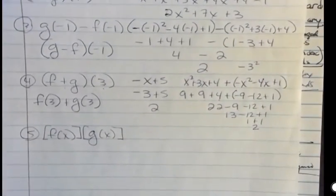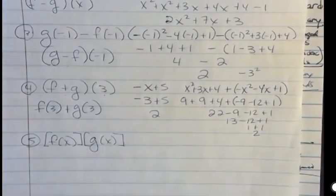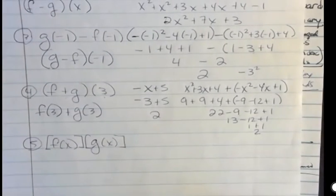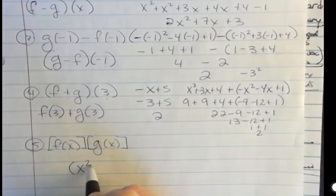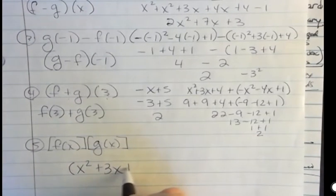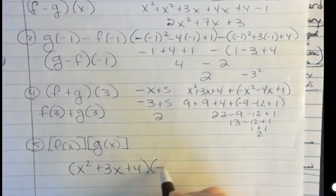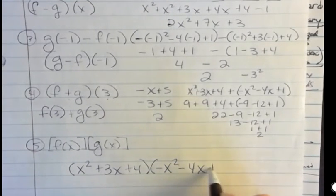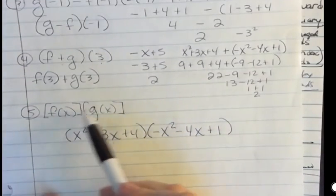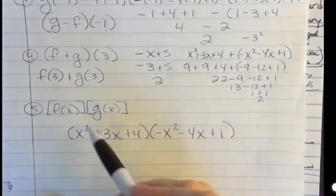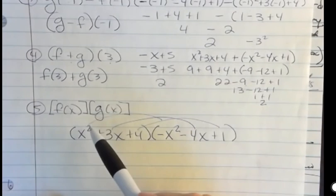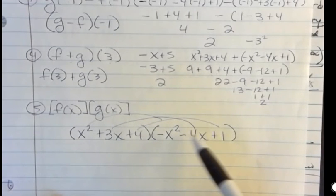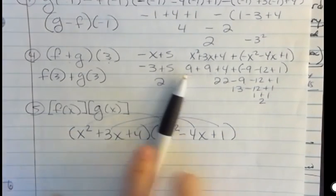Finally, I could have something like this where I have f of x times g of x. And since I just did a video where I showed you how to multiply, I'm not going to go all the way through this. But our f of x above was x squared plus 3x plus 4. And our g of x was negative x squared minus 4x plus 1. So what this is saying when I'm writing, this is saying multiply those two. I'm going to multiply all these terms together, right? I'm going to have to do nine multiplications. x squared times all three, then 3x times all three, and then four times all three. But the notation is what I want you to notice.